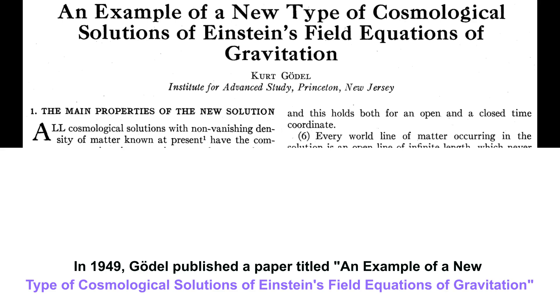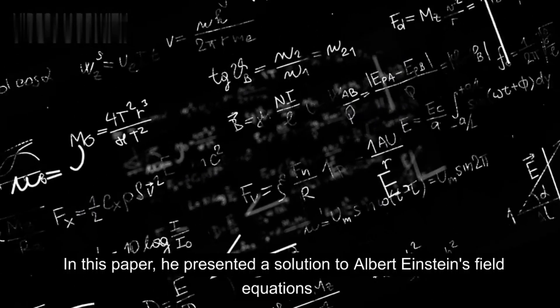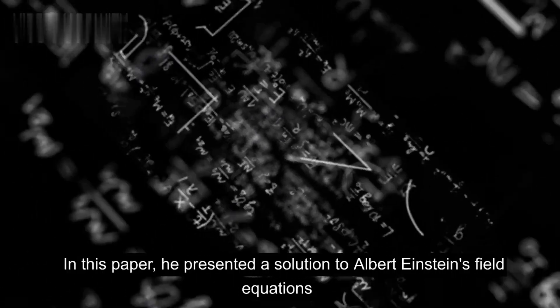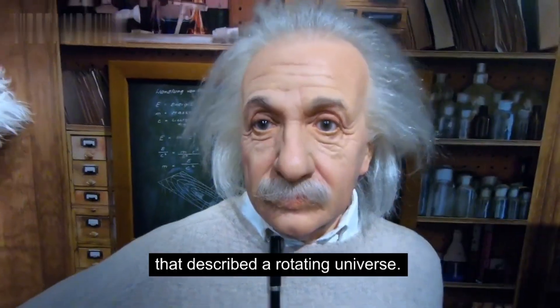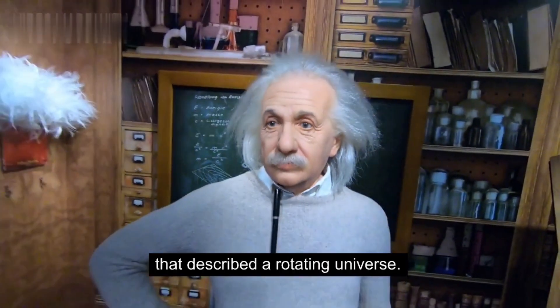In 1949, Gödel published a paper titled 'An Example of a New Type of Cosmological Solutions of Einstein's Field Equations of Gravitation.' In this paper, he presented a solution to Albert Einstein's field equations that described a rotating universe.